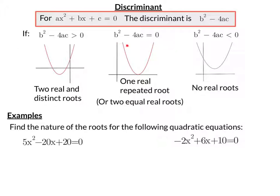If it's equal to 0 you have one real repeated root or two equal real roots, where it just touches the x-axis. And when b squared minus 4ac, your discriminant, is less than 0, you have no real roots—it does not cross the x-axis.